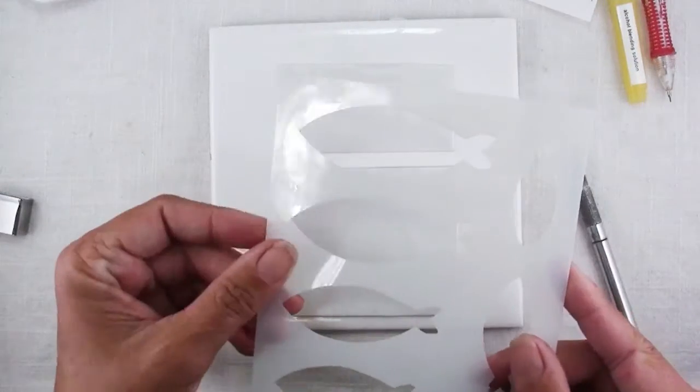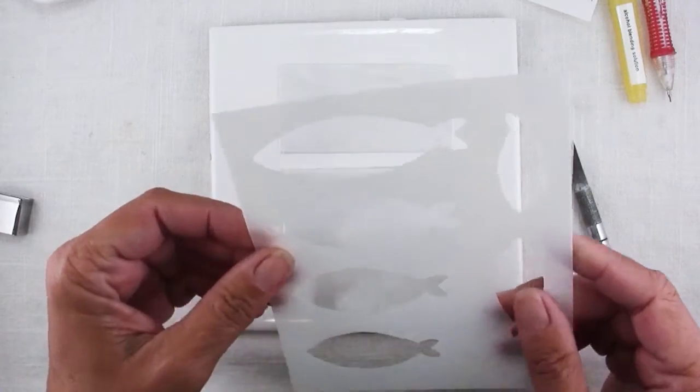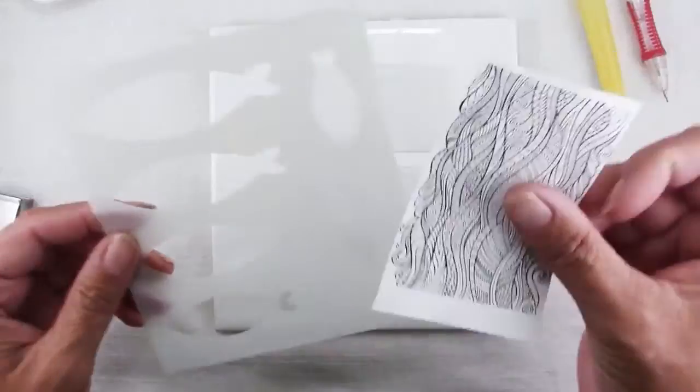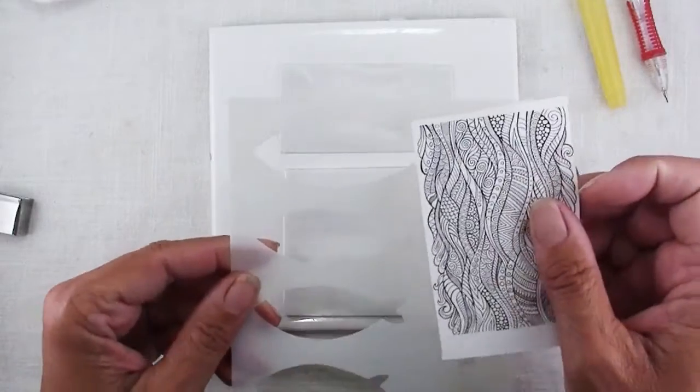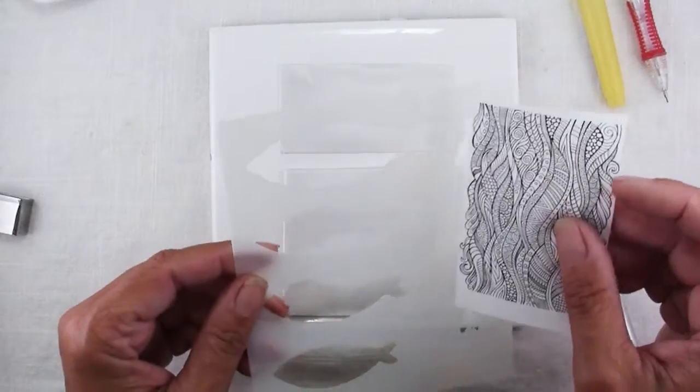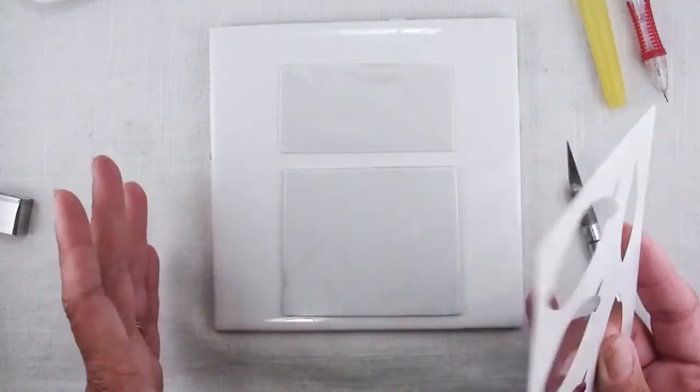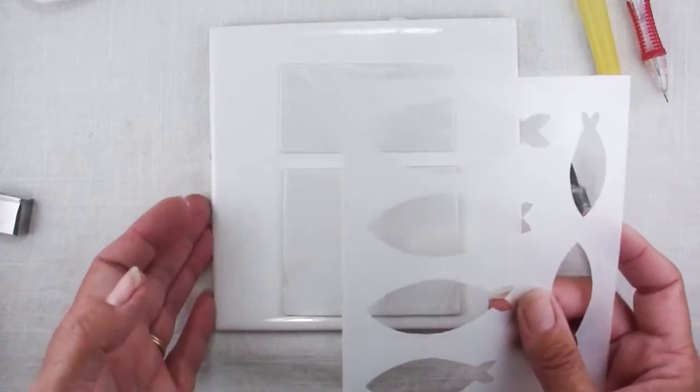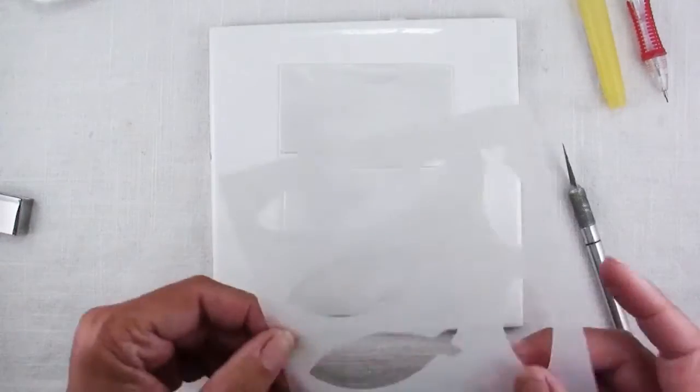So this cute little fish stencil came in the Ocean of Dreams Create Along box and I am going to use this to make a luggage tag along with the magic transfer paper and a really fun, simple coloring technique. So the first thing we need to do is cut out our template and we'll need to do that three times for our luggage tag.